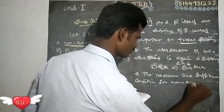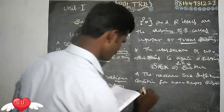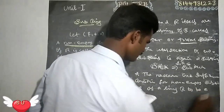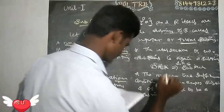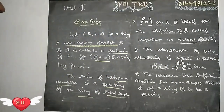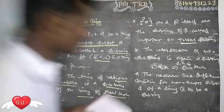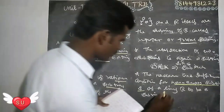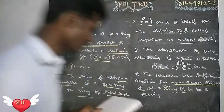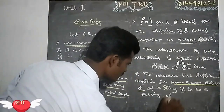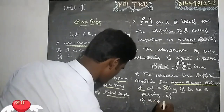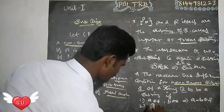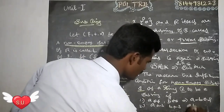The necessary and sufficient condition: for a non-empty subset S of a ring R to be a subring, two conditions must hold. First condition: if a and b belong to S, then a minus b also belongs to S. Second condition: if a and b belong to S, then a times b also belongs to S.